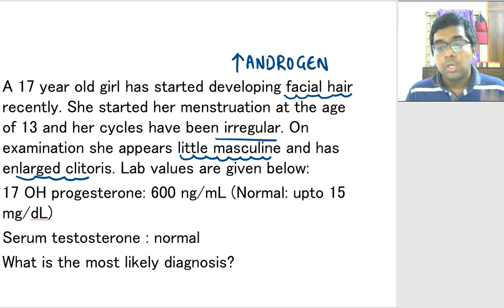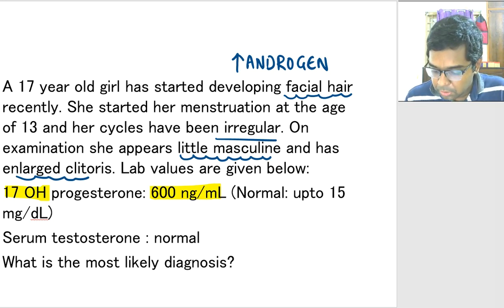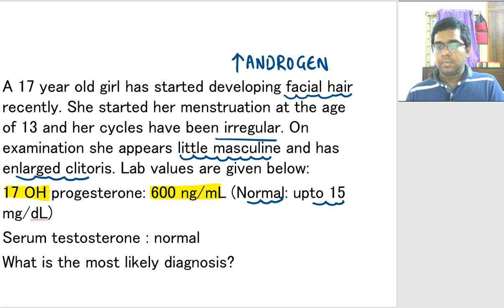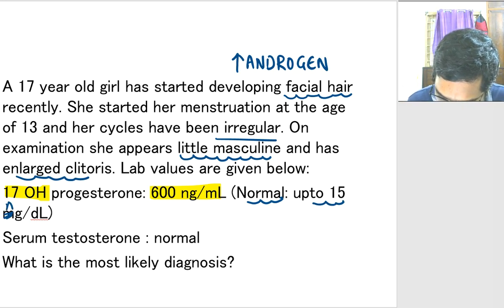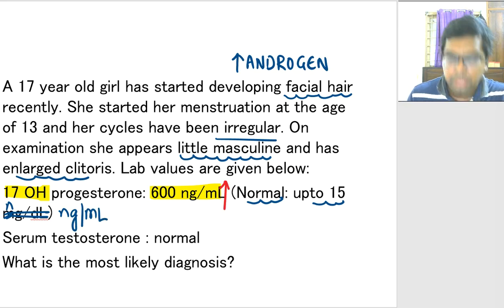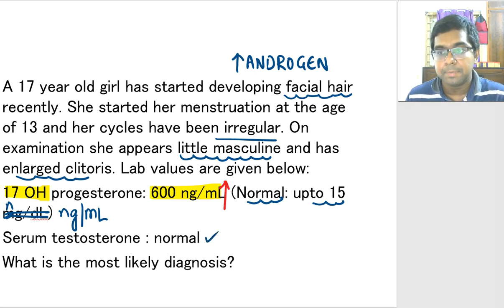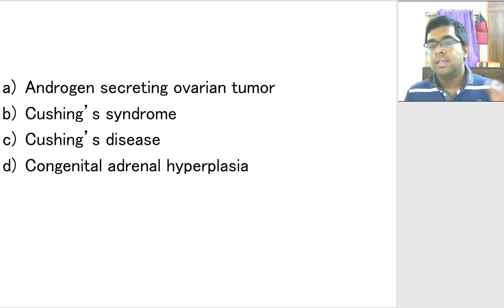Looking at the lab values: 17-hydroxyprogesterone is 600 ng/mL. This is significant because the normal value is up to 15 ng/mL. We can clearly interpret that 17-hydroxyprogesterone levels are increased. Serum testosterone is normal — we may expect high testosterone because of increased androgen, but here it is normal. Now Cushing syndrome and Cushing disease are out of the question because you would expect obesity and other features like striae and redistribution of fat, but nothing like that is given in the question.